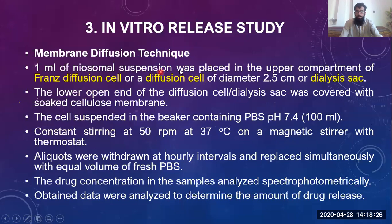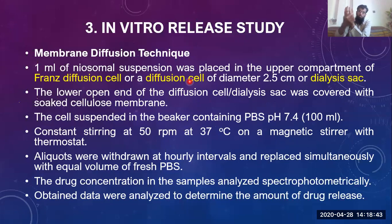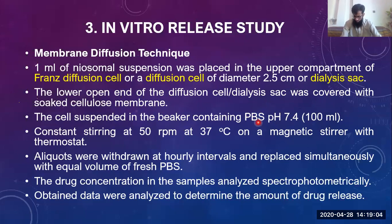We tie a membrane to the lower open end where we put the niosomal preparation, and we close it with the filter paper. We then cover it with the membrane and add it to a phosphate buffer solution. Normally a 7.4 pH phosphate buffer is used, because niosomes are small in size and distribute widely, reaching the small intestine quickly. That is why we use 7.4 pH media, though different pH media can be used.